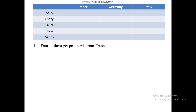Our first clue says that four of them get postcards from France. Take note that we don't know yet who among the five of them are those receiving from France, because no name is specified here. So you cannot answer it yet — we're going to go back to this first clue later on. Stand by on that clue, because we don't know yet which four among the five it refers to.